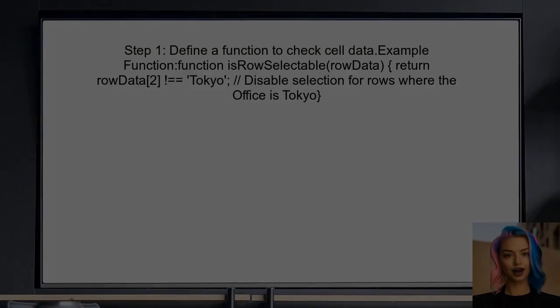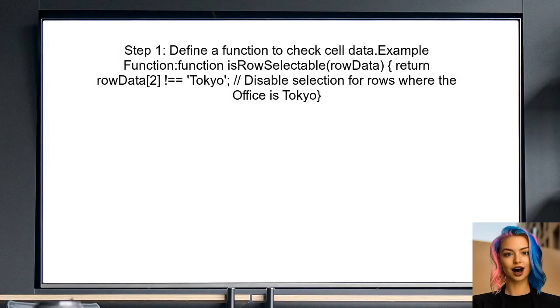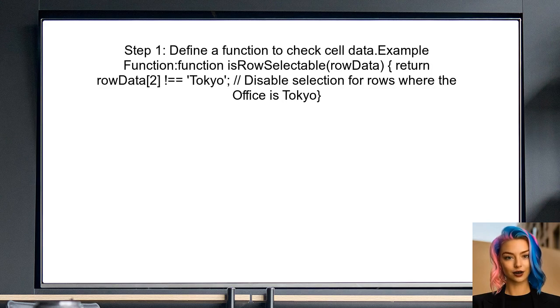To disable row selection based on cell data, first define a function that checks the data in the specific cell of each row. This function will determine whether the row should be selectable or not.